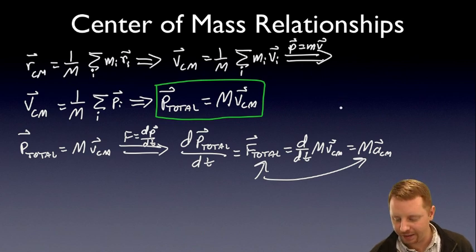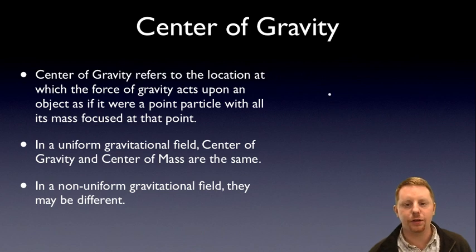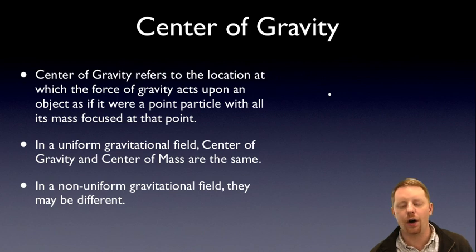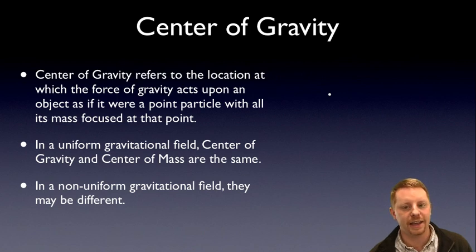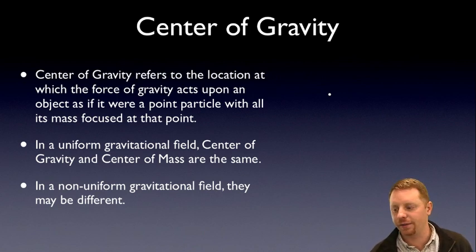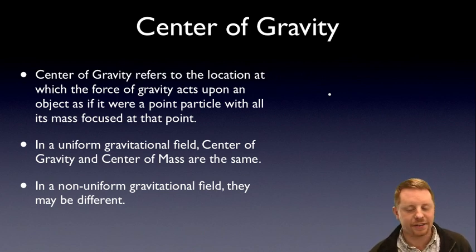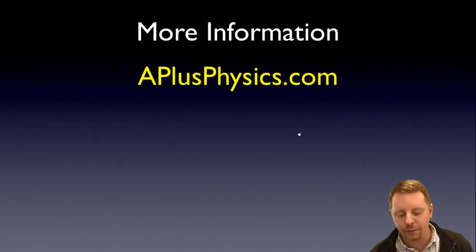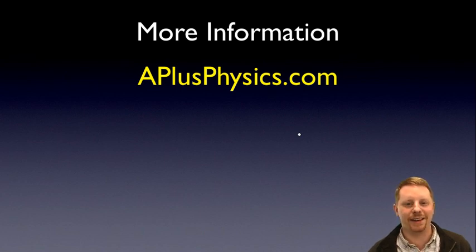One last topic: center of gravity. Center of gravity refers to the location at which the force of gravity acts upon an object as if it were a point particle with all its mass focused at that point. This sounds very similar to center of mass, and in a uniform gravitational field they are actually the same. However, in a non-uniform gravitational field, the center of mass is where you treat the entire object's mass as concentrated at a single point, while the center of gravity is where the force of gravity acts. In a non-uniform gravitational field they can be different. Hopefully that gets you started with center of mass and center of gravity. Check out aplusphysics.com for more help.